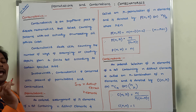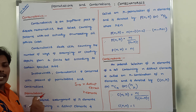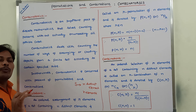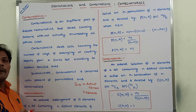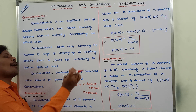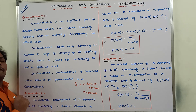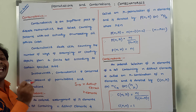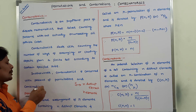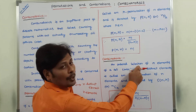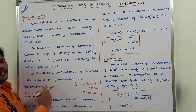For arrangement purpose, we have to use permutations. For selection purpose, we have to use combinations. So if we want to select R objects from a set of N distinct objects, we use combinations. If we want to arrange R objects from a given set of N different distinct objects, we use permutations.